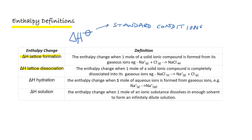The lattice formation energy is the enthalpy change when one mole of a solid ionic compound is formed from its gaseous ions — for example, Na⁺(g) + Cl⁻(g) → NaCl(s). The lattice dissociation energy is the exact opposite: the enthalpy change when one mole of a solid ionic compound is completely dissociated into its gaseous ions, NaCl(s) → Na⁺(g) + Cl⁻(g). Do remember to include correct state symbols — without them, the equations are incorrect.